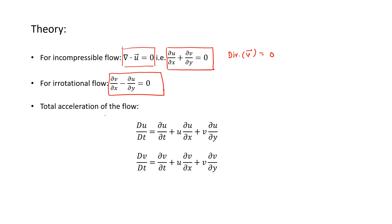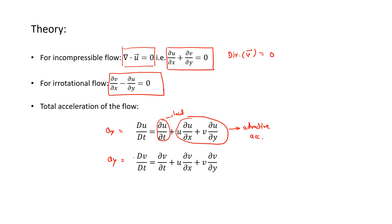We also need to know the total acceleration of the flow. The x-component of acceleration is the material derivative of u with respect to t, made up of the local acceleration and the advective acceleration terms. Similarly, the y-component is the material derivative of v. Together, the total acceleration vector is a = ax î + ay ĵ.